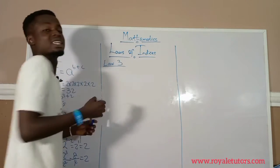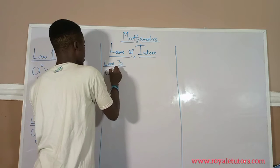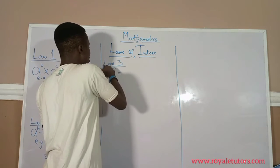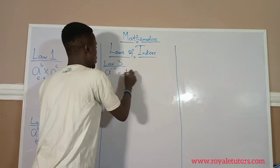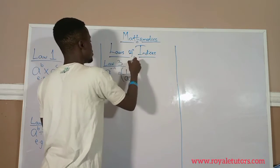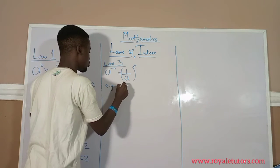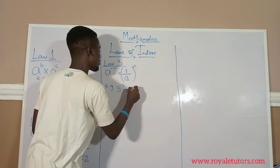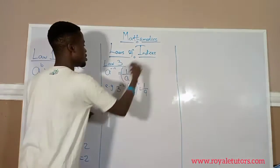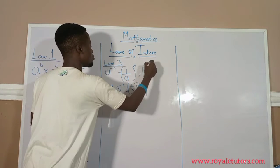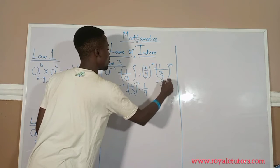Law 3: what if we have a negative power? n raised to power minus n is the same thing as 1 over whatever the base is. You divide 1 by the base, and once you push it down, you remove the negative to have a positive power. For example, 3 raised to power minus 2 is the same as 1 over 3 raised to power 2, which is 1 over 9. Even if it is a fraction like x over y, all raised to power minus n, it becomes 1 over x over y raised to power n, which is the same as y over x all raised to power n.